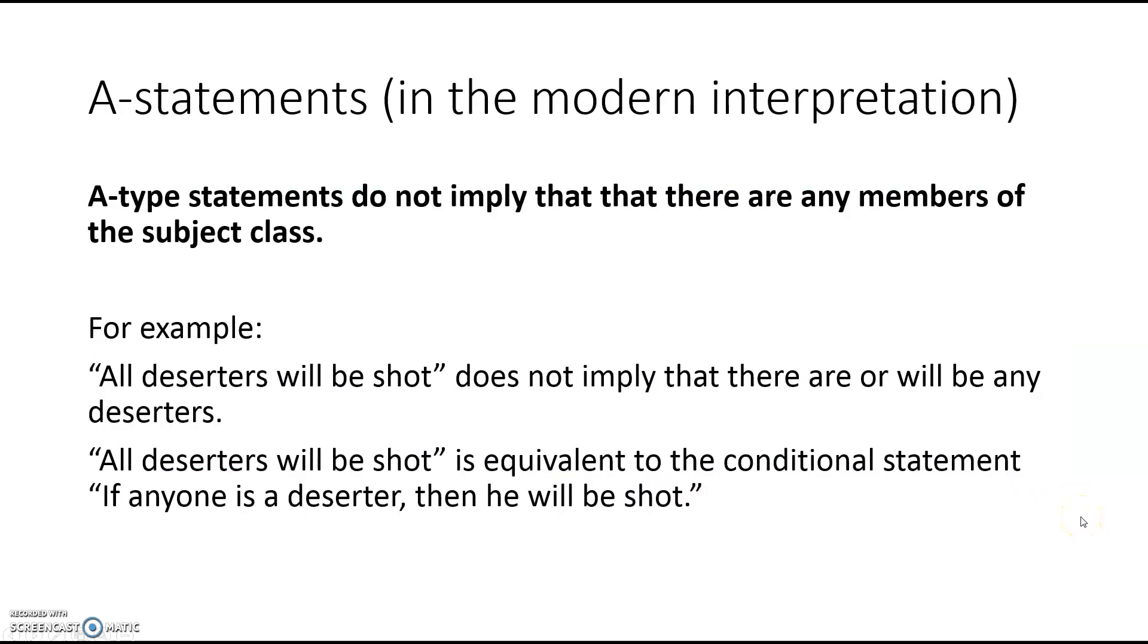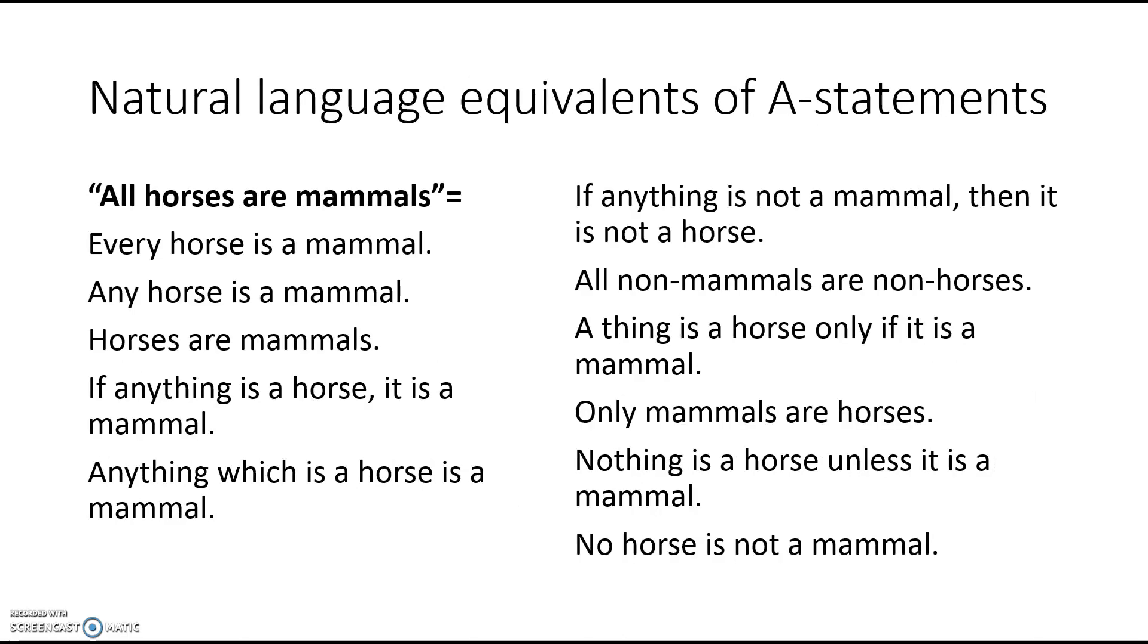Now, one note about A statements, the all diamonds are gems types. When you make an A statement, that doesn't imply that there are actually any members of the subject class. Let me give you an example. If I say that all deserters will be shot, that doesn't necessarily imply that anyone will be a deserter. Maybe there are no deserters and there will be no deserters. All deserters will be shot is just equivalent to the conditional statement: if anyone is a deserter, then he will be shot.